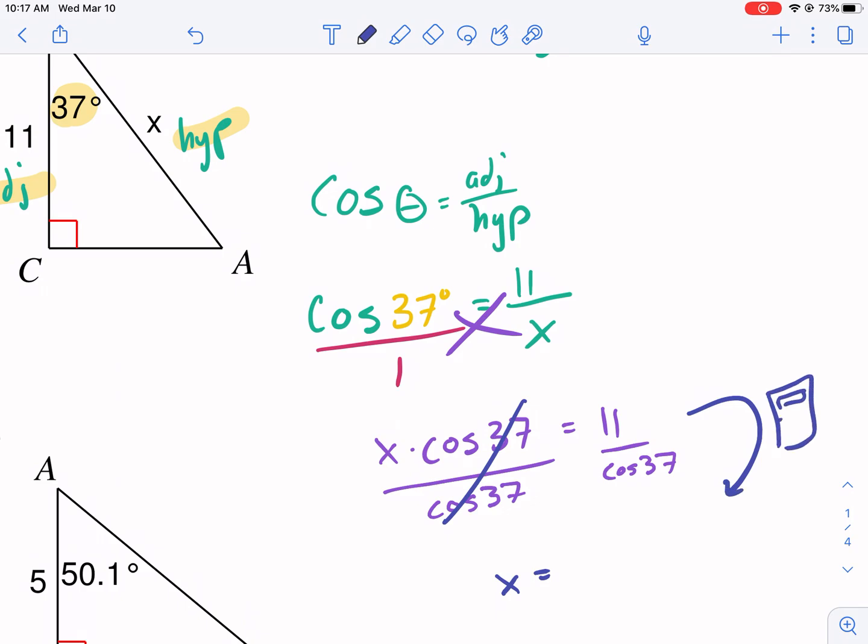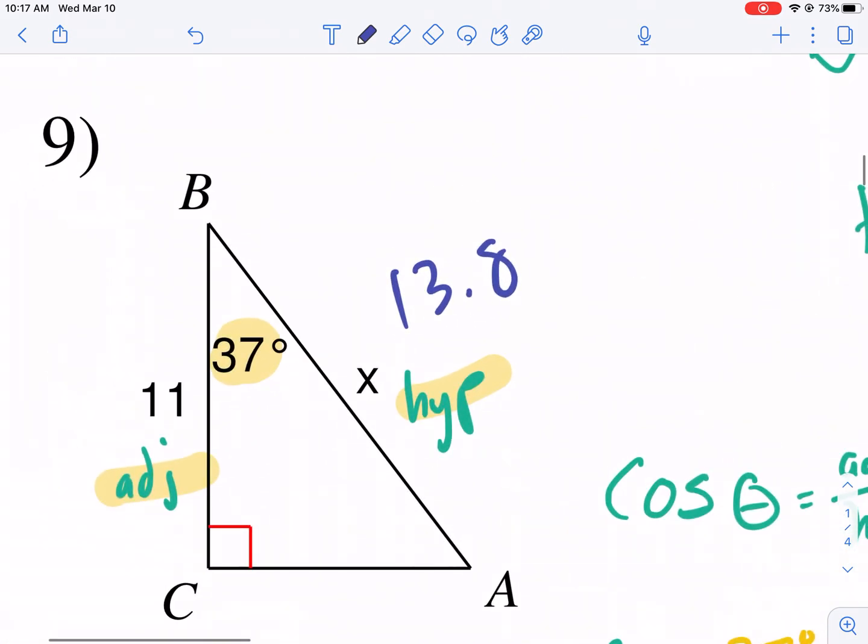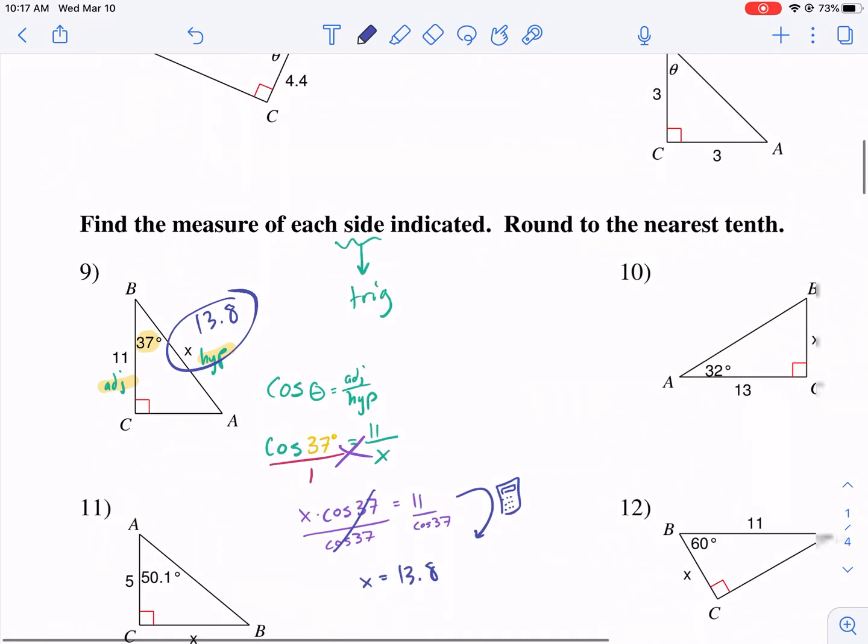I get X equals 11 divided by cosine 37. This is where I'm going to use my calculator. The mathematicians created charts a long time ago. Your calculator has all those charts already programmed in. So we're going to do cosine of 37. I get 13.8. So this side is 13.8. You can always check your answer when you're done. The hypotenuse should be bigger than the other two sides. 13.8 is bigger, so 13.8 is going to be our answer here.